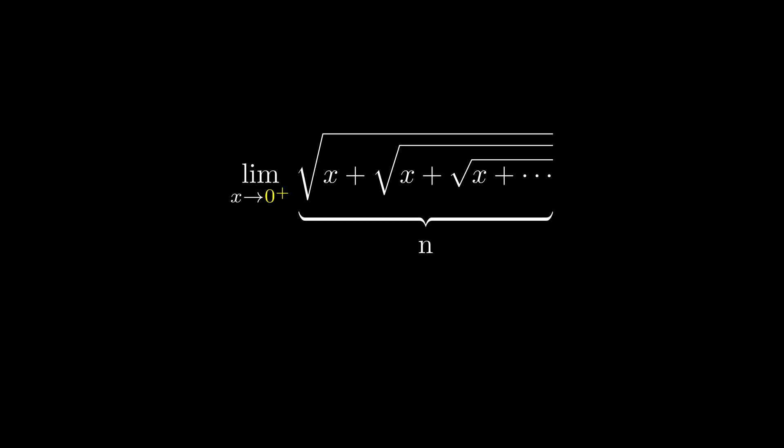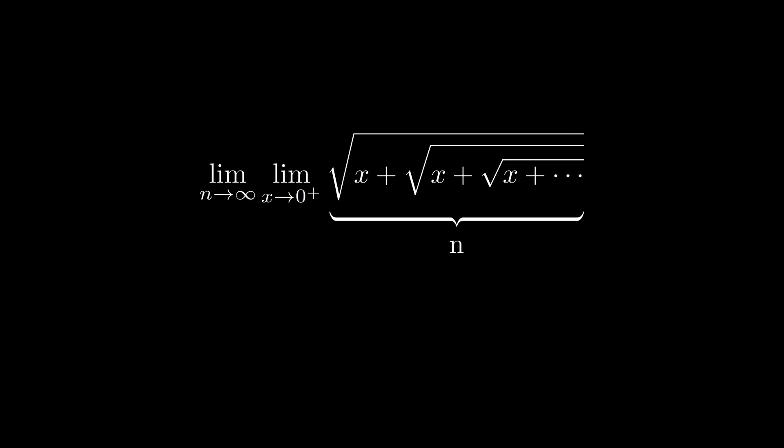If we denote the depth of nesting as n, it becomes clear that we have a double limit. For any finite n, if we send x to 0 first, the inner limit becomes 0, and then we send n to infinity, which doesn't change the 0 at all. But the proper way to interpret this question is to send n to infinity first, then send x to 0.